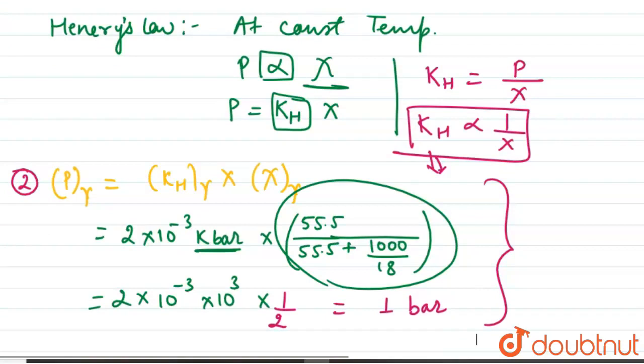In case of the third option, we can take pressure of delta equals KH into pressure of delta into mole fraction of delta. So like this we can calculate. Similarly, we can calculate for the fourth option also.